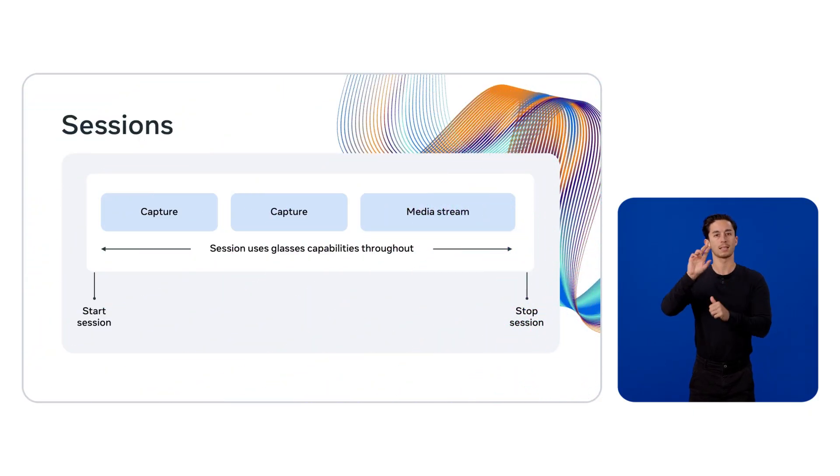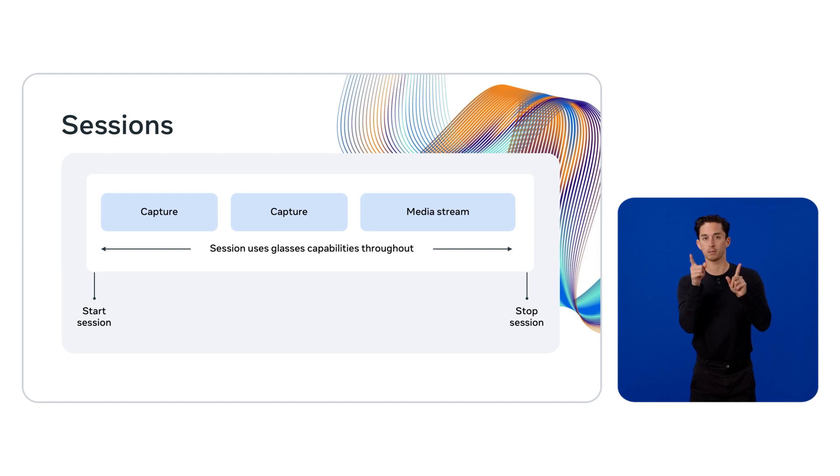The SDK supports session-based experiences. Sessions are your entry point to building experiences with the SDK. A session is a secure and optimized connection between your app and the AI glasses, which is initiated when you start the app. Sessions have two main responsibilities: first, accessing the device's sensors such as the camera, and second, handling interruptions such as receiving a phone call or taking off the glasses. The session is also how we convey information to the person using the glasses — for example, we notify them when the app will start using the glasses camera.